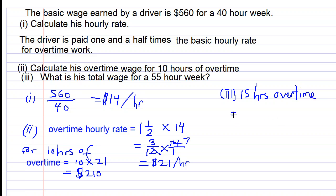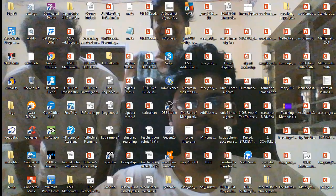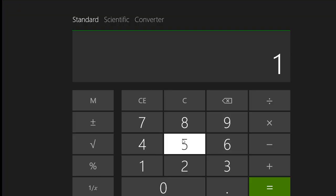And that would be 15 times 21. So let's go to our calculator. 15 times 21 is $315.